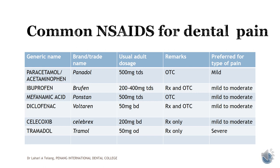First of all is paracetamol — also known by the chemical name acetaminophen. The common brand name available is Panadol. The usual adult dosage is 500 mg TDS, which stands for 3 times a day. It is an over-the-counter drug and is generally useful for mild pain.